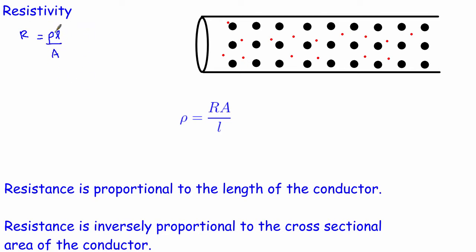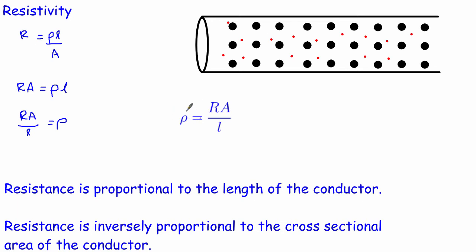The resistivity rho is a property of the material. For example, copper has a certain resistivity. The resistance depends upon the resistivity — the type of material — and also the length and area of the wire. On your data sheet it's written as rho equals RA over L, which is simply this equation rearranged. If we multiply both sides by A and then divide both sides by L, we get RA over L equals resistivity.